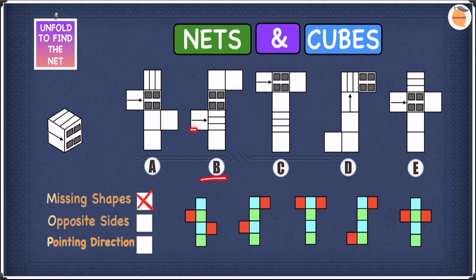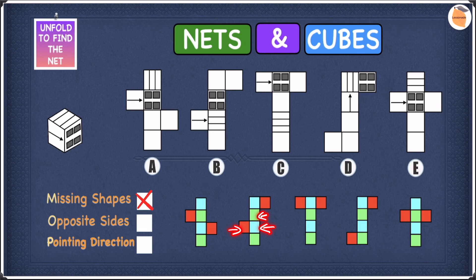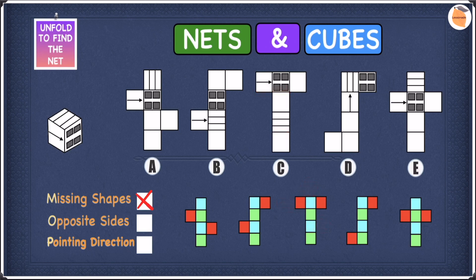In C we have the arrow, the window, and the stripy pattern. The arrow is here, the window here, and the stripy pattern here. We have two shapes on the same color, which means they're on opposite sides — so if you fold this cube they will never be next to each other. As a result we can cross off C, and we're left with A, B, D, and E. In D we have the arrow, the stripy pattern, and the window, and they're all on different colors, so none of them are on opposite sides.